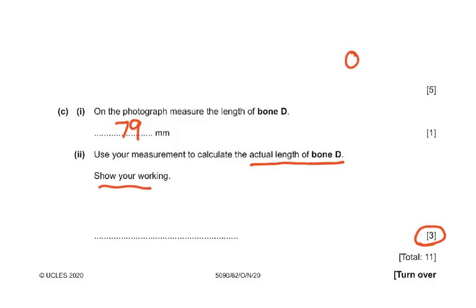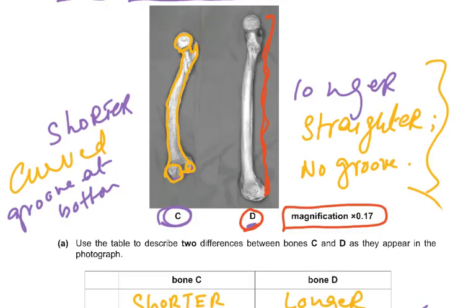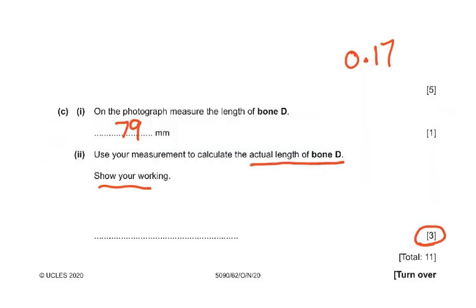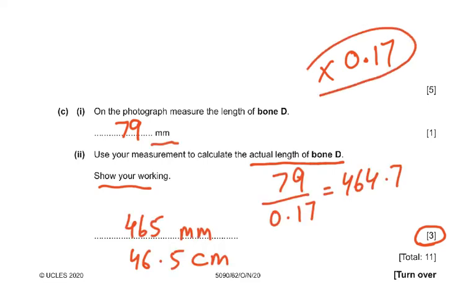The magnification given is 0.17. Since magnification = image size / actual size, you divide the measured length by the magnification: 79 ÷ 0.17 = 464.7, which rounds to 465 millimeters. You can also express this in centimeters by converting.